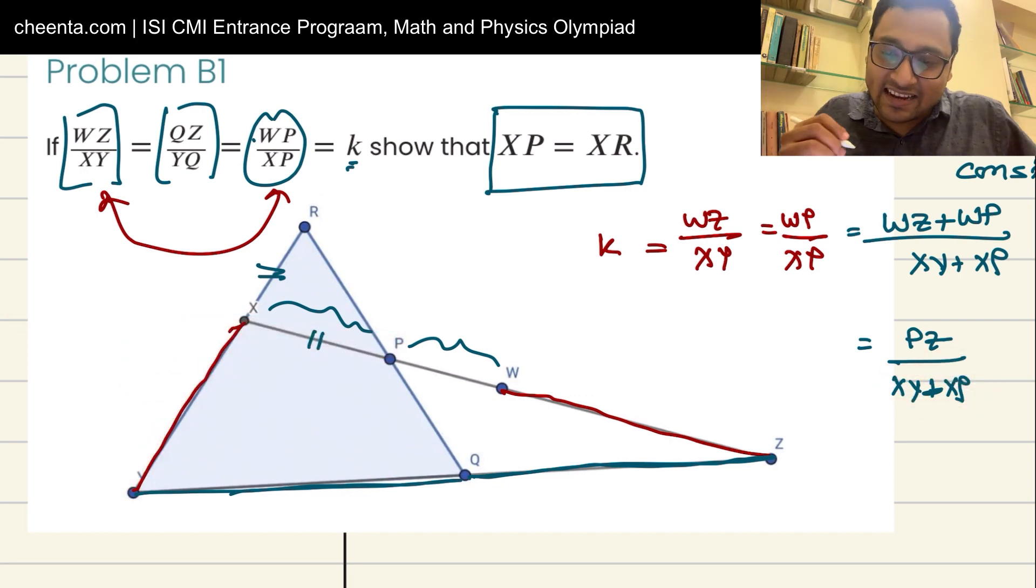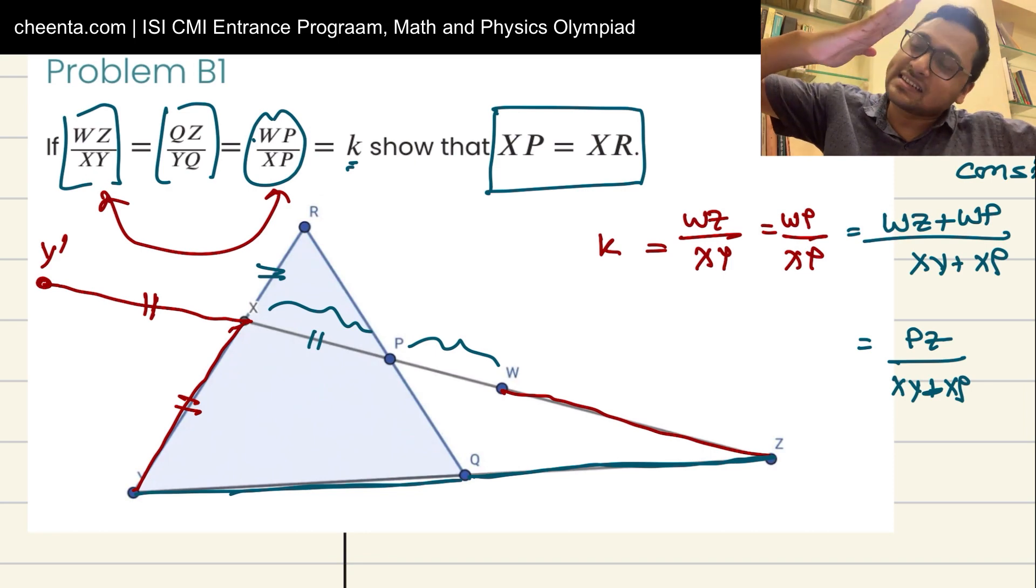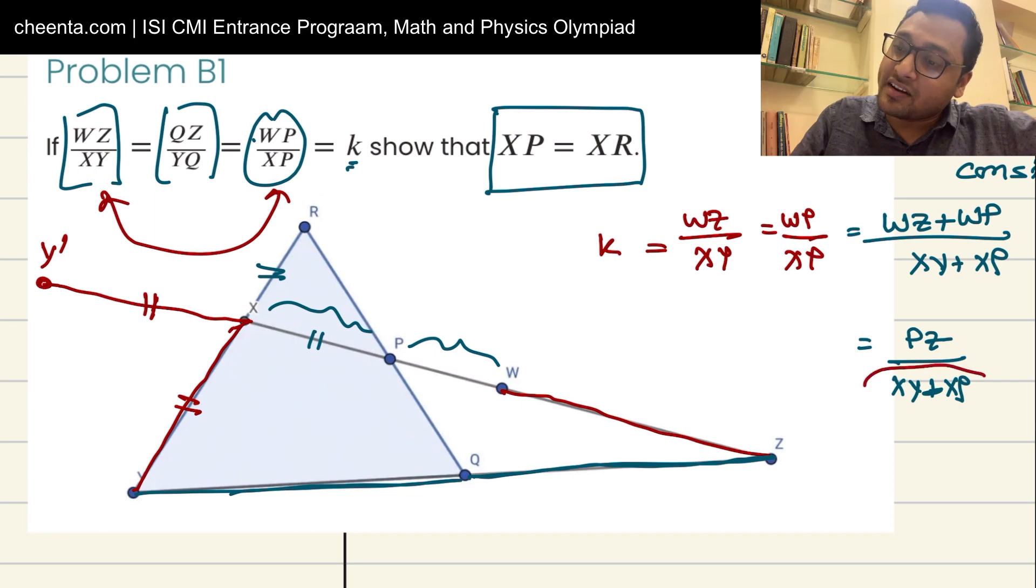So that's exactly what I will do. That's the construction, the magical construction. I will extend it to Y prime such that XY and XY prime are equal. In my mind I did the butterfly move. I sort of opened it up so that the denominator becomes one piece of straight line. And then of course I will join Y prime and Y.